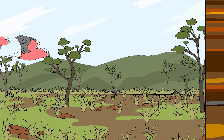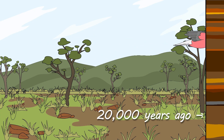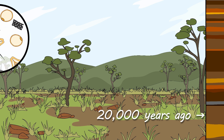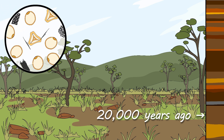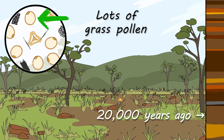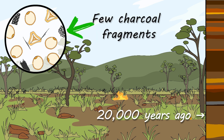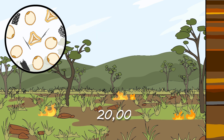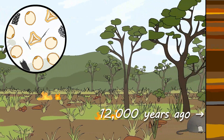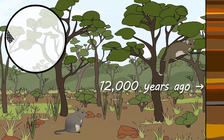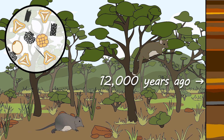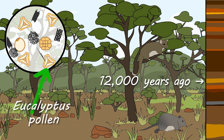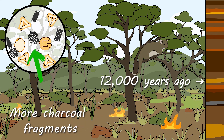Lake core records show us that around 20,000 years ago, during the coldest part of the last ice age, Australia was covered by large open grasslands with few trees. Fires were small and infrequent. After the end of the ice age, around 12,000 years ago, the climate changed and more trees filled the landscape. Small cool fires became more frequent.